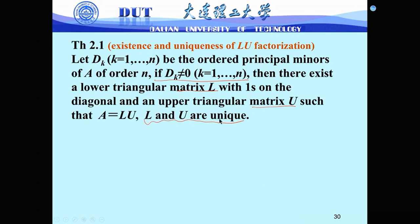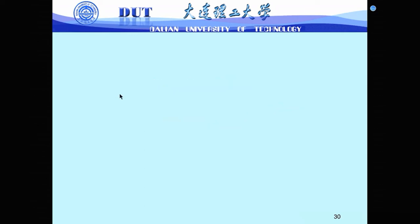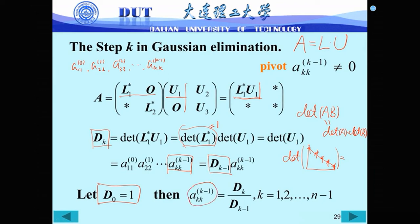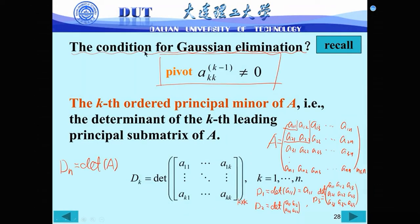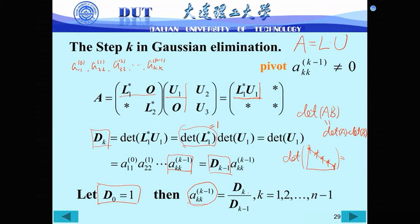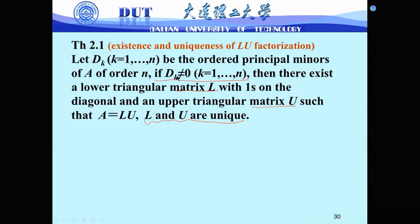Existence means: if the condition is satisfied, we can obtain LU factorization using Gaussian elimination and also obtain unique results L and U. For existence, since the pivot equals Dₖ/Dₖ₋₁, if all Dₖ are non-zero then all pivots are non-zero, so we can perform Gaussian elimination and obtain LU factorization.